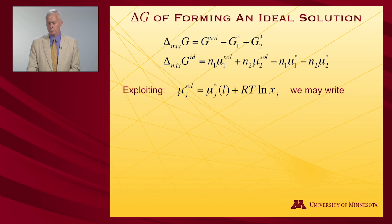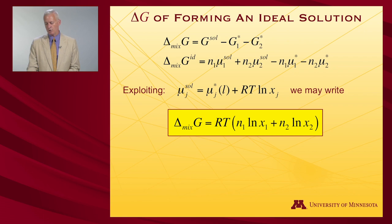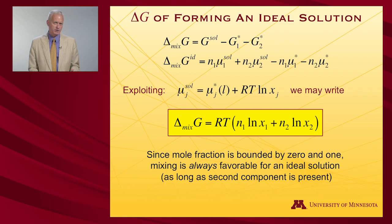So the mixing free energy is RT number of moles log mole fraction one plus number of moles log mole fraction two. Remember that mole fraction is a number between zero and one. It's bounded by those two values. So the logarithm of a number less than one and greater than zero is well-defined and it's always negative. So this says that it is always favorable to mix an ideal solution.